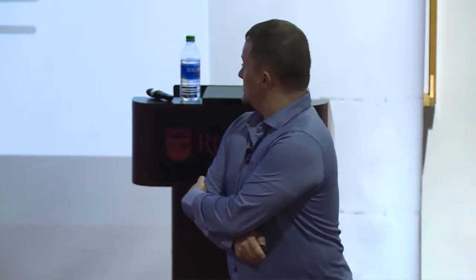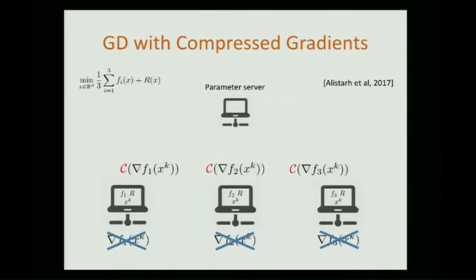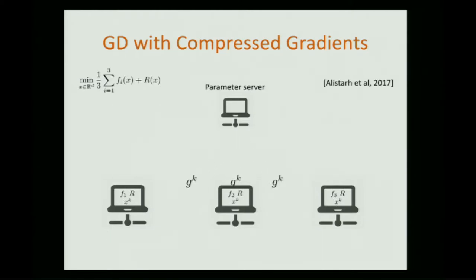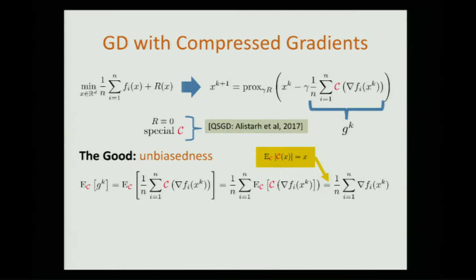Here's gradient descent with compressed gradients (CGDC). We compute gradients, compress them, and communicate the compressed gradients. The parameter server averages the compressed gradients exactly as before. This looks like a perfectly fine algorithm, and indeed from the unbiasedness property of C, the average compressed gradient is still an unbiased estimate of the full gradient.